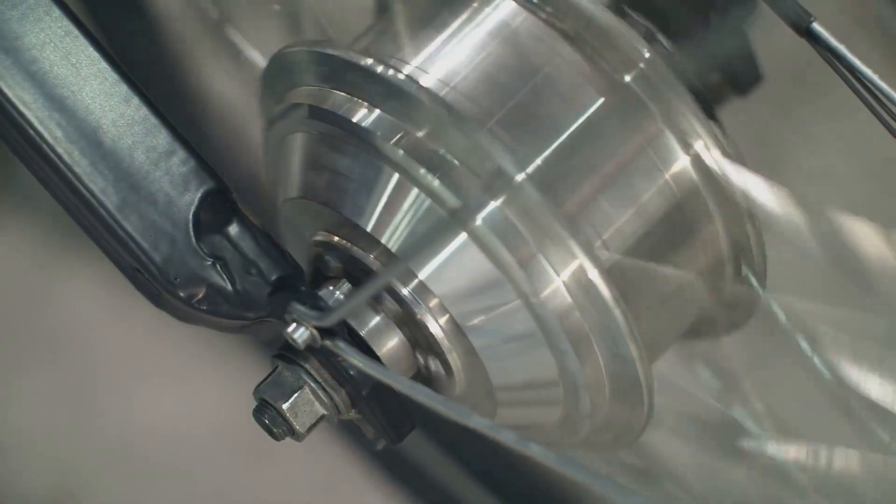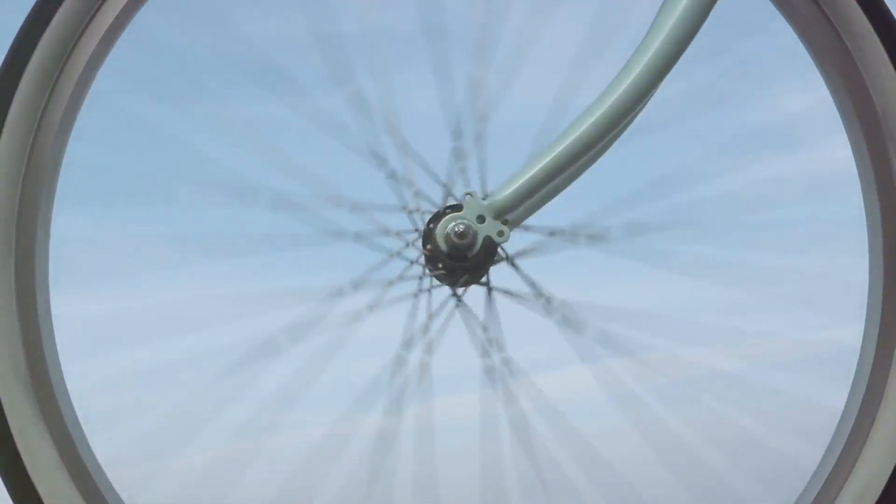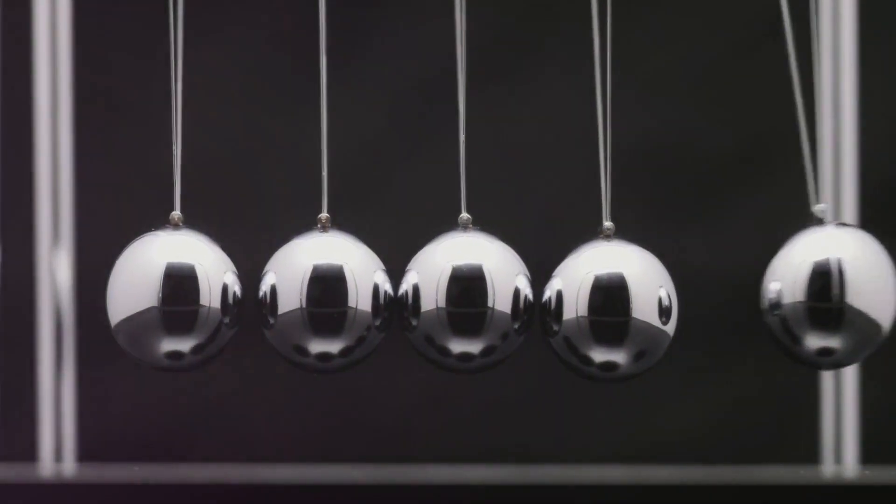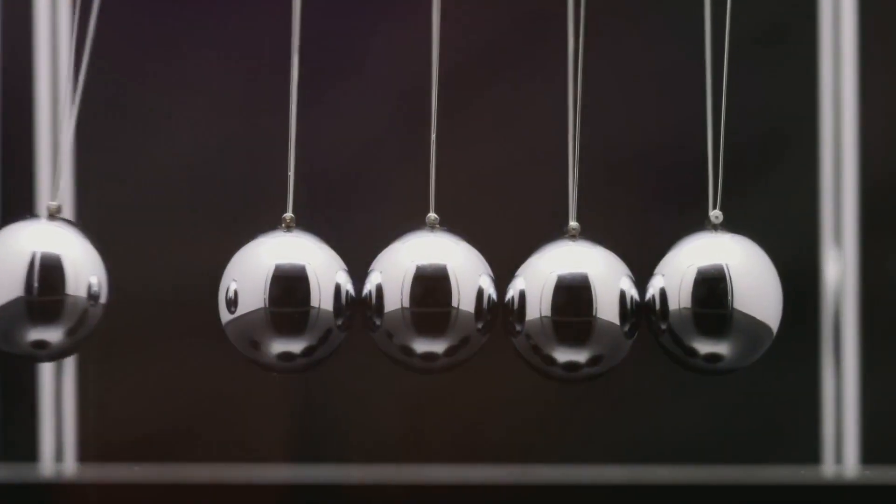Now what keeps the top upright? That's where gyroscopic stability comes in. When a force tries to tilt the top, gyroscopic effect causes the top to precess, or move in a circular path, instead of falling over. This is the same principle that keeps a bicycle upright when it's moving.